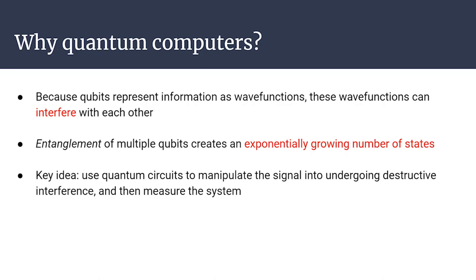Another way to see the information we can exploit: if we have a system of n qubits entangled with each other, each qubit can either be zero or one, and each additional qubit doubles the number of states. So with n qubits, you have 2^n possible states. Because of entanglement, we're actually computing on all of those states at the same time.